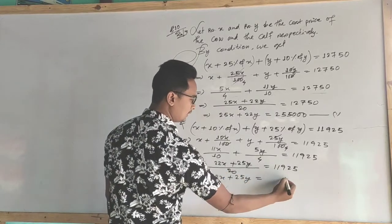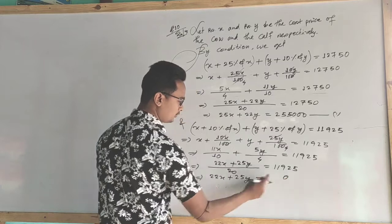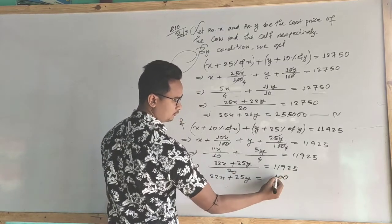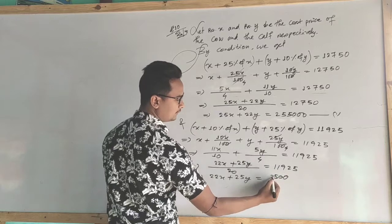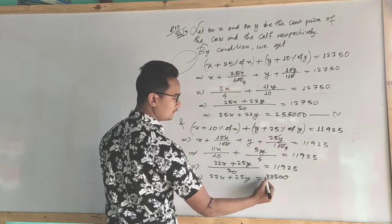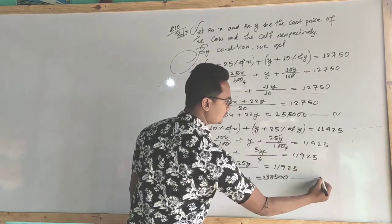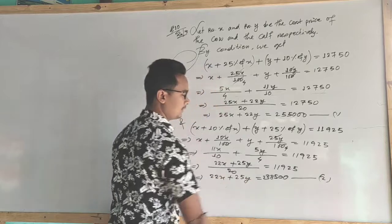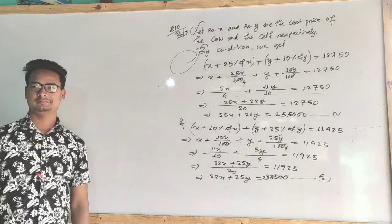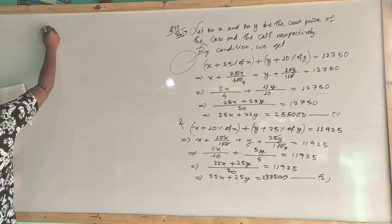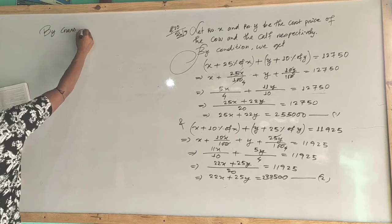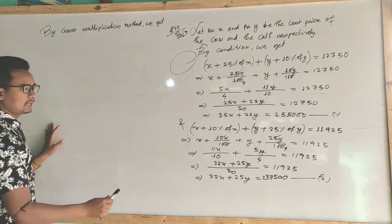Then multiply the two equations and apply cross multiplication method. We get 22 by 25 minus 25 by 22 on the coefficient side. Working through the cross multiplication gives the determinant values needed to find x and y.